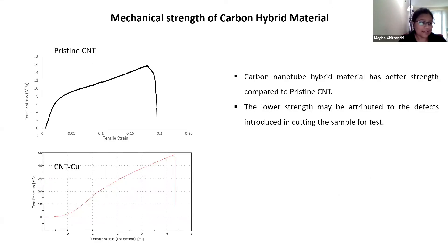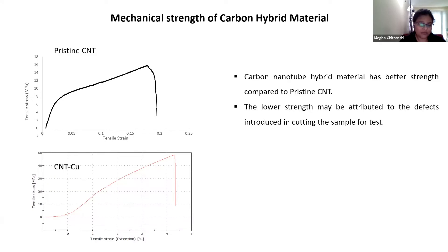For mechanical properties, samples were tested using an Instron machine with more than 10 samples tested. The results show that the hybrid material CNTCU gives better results compared to pristine CNT. The lower strength values may be attributed to defects introduced during sample cutting for testing, and the values are lower than reported in other literature, but we expect the strength of the synthesized sheet without cutting should be around 0.2 GPa.